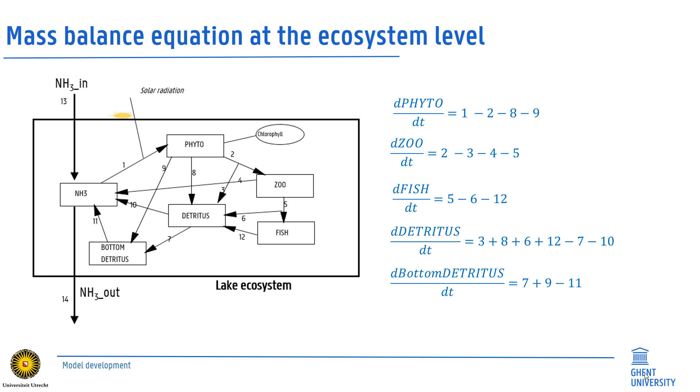Nitrogen in detritus that sinks to the bottom results from imports seven and nine minus export eleven. And finally, dissolved ammonia is additionally impacted by transport into the lake, this is the import flux thirteen, and export from the lake by flow number fourteen.